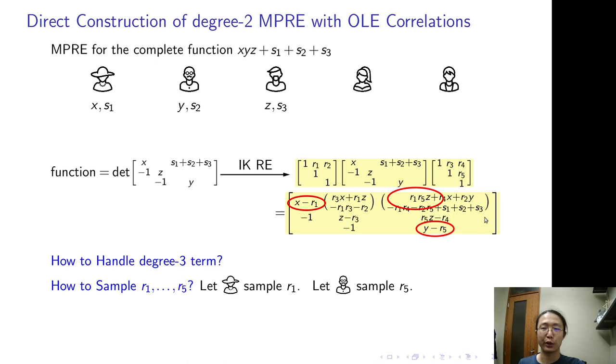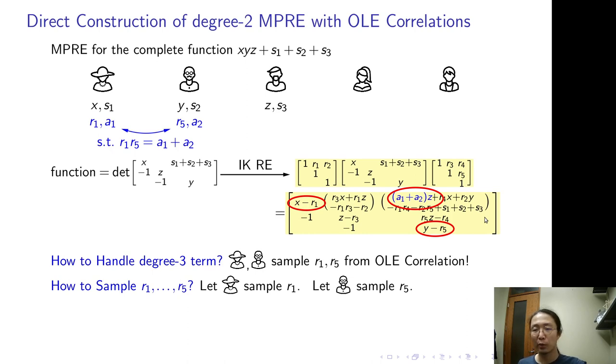Now back to the first question - how to handle the degree 3 term? The answer is use OLE correlated randomness. The OLE correlation provides random R1, random R5, and the additive share of R1 times R5. Now, by replacing R1 times R5 by its additive share, the encoding matrix no more have any degree 3 term. So that's it.